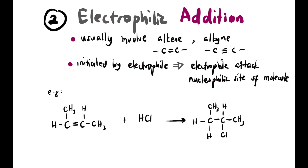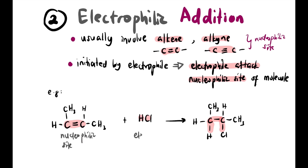Electrophilic addition usually involves alkenes and alkynes, which are the nucleophilic sides of a molecule. An electrophile attacks the nucleophilic site, so it's called electrophilic addition. For example, an alkene (C=C) reacts to give a product with a new C–H and C–Cl bond. The C=C is the nucleophilic site attacked by an electrophile — two reactants give one product, with H and Cl added to the compound.